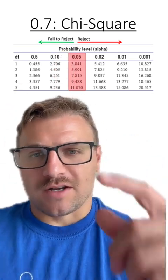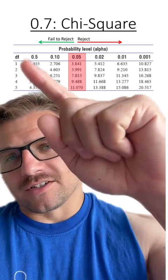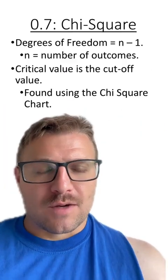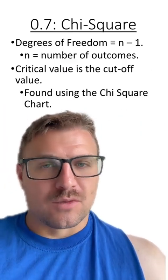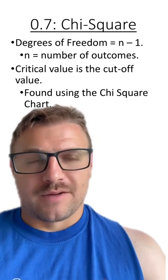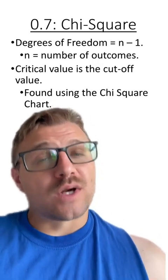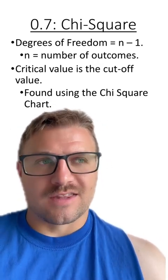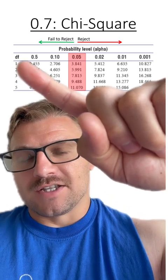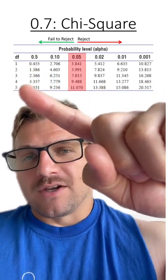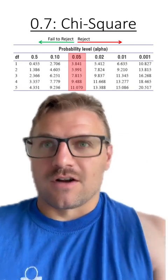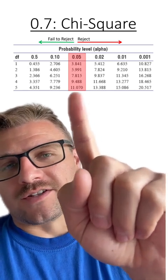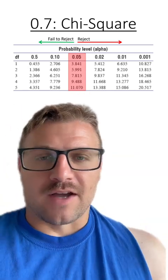Now your next question while looking at this chart is, why do they have different degrees of freedom or different lines here? These lines represent different degrees of freedom, which are the numbers of outcomes for your experiment minus one. Again, the critical value is the cutoff value. And we find that using the chi-square chart. On the left-hand side here, you can see we have the degrees of freedom and they go down to five. Now they can go further as you add on more variables. But your critical values are going to be found here at the 0.05 p-value mark.